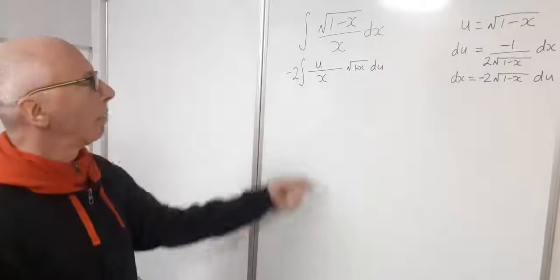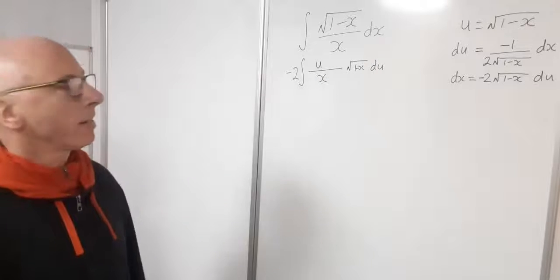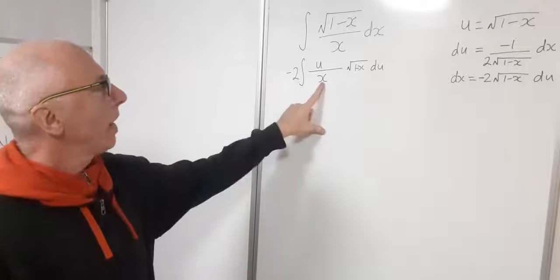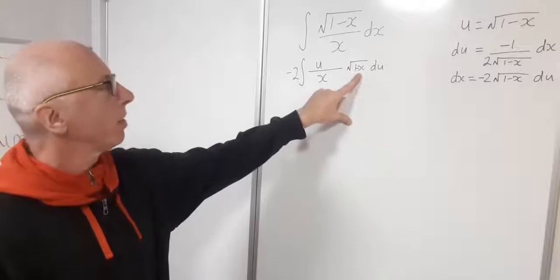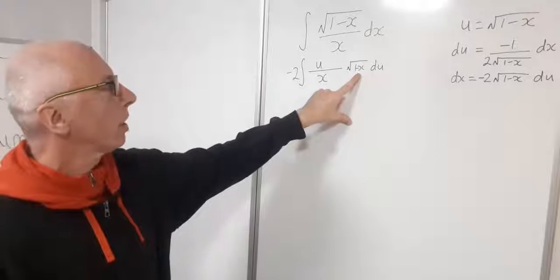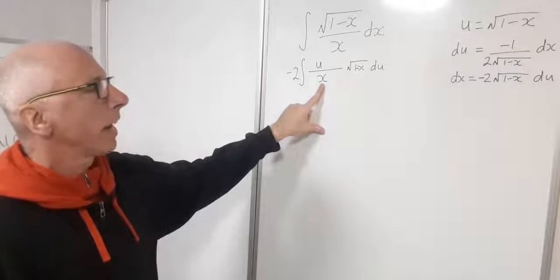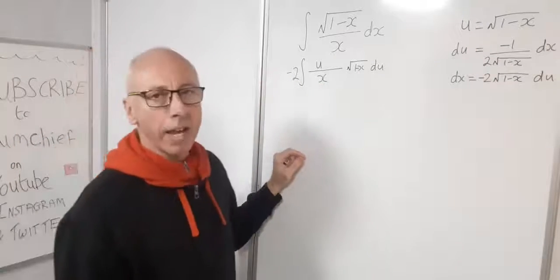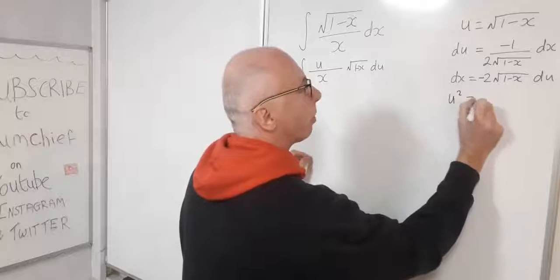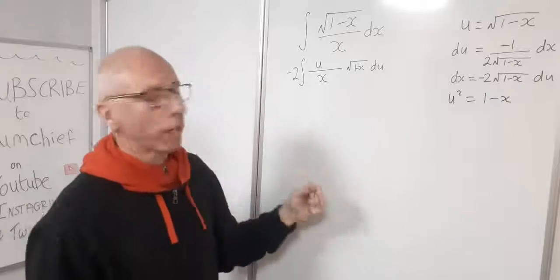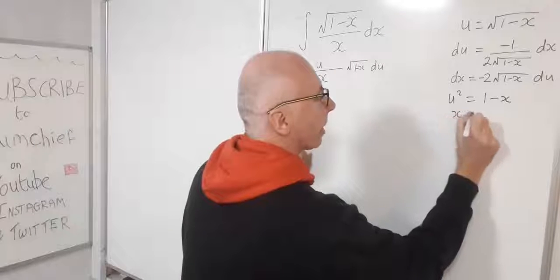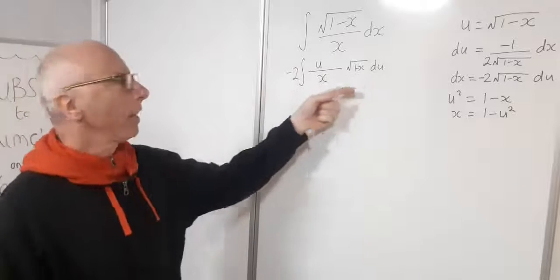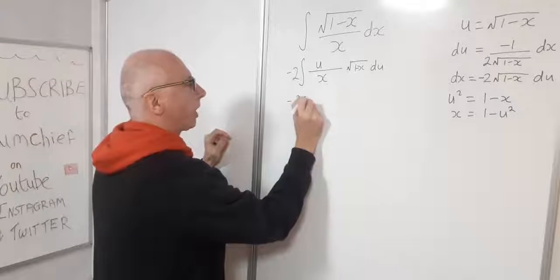That's a little bit awkward because we still have x in the denominator. We can see that square root of 1 minus x transfers as u, but we need to handle the x. Squaring u gives u squared equals 1 minus x, so x equals 1 minus u squared. Now let's get this fully into the u variable.